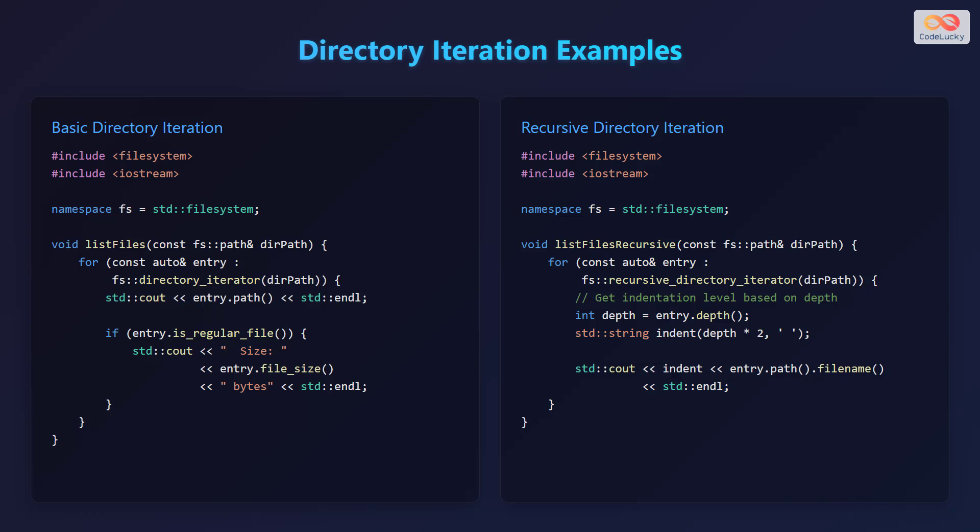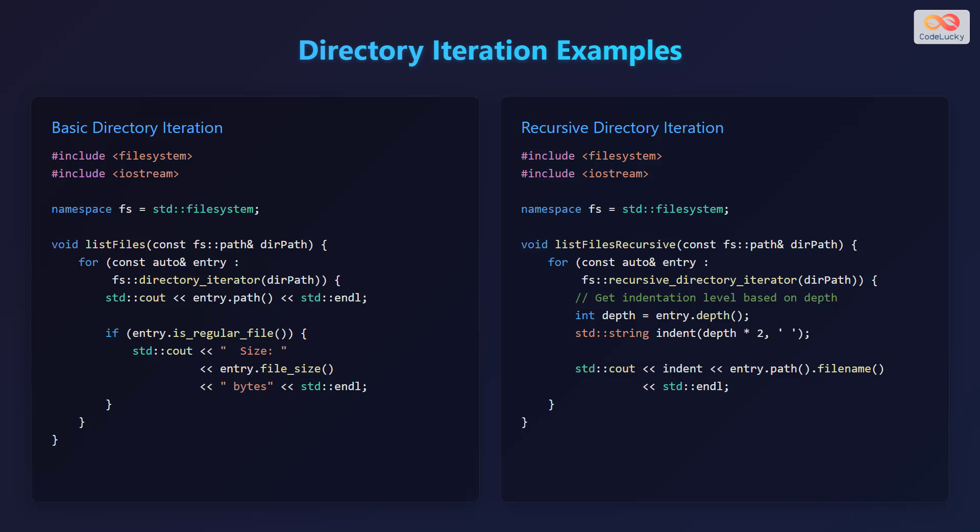Let's see some directory iteration examples. First, basic directory iteration. Include the filesystem and iostream headers and create a namespace alias fs. The function list_files() takes a const reference to an fs::path named dirpath. It iterates through the directory using a for loop and a directory_iterator, printing the path of each entry to the console. Also, if the current entry is a regular file, it prints its size in bytes.